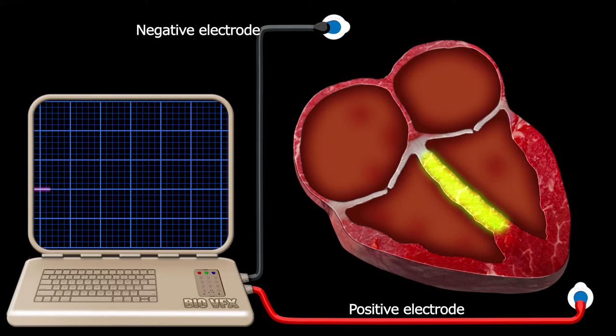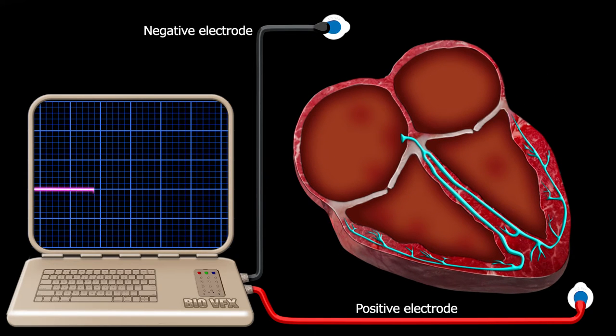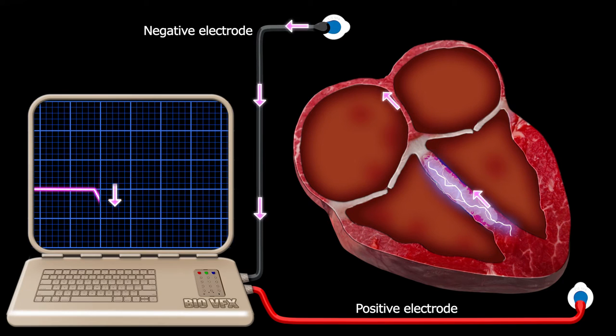The ventricular septum gets the current from the left bundle branch and sends the current in the opposite direction. The ECG displays this movement away from the positive electrode as a negative deflection.